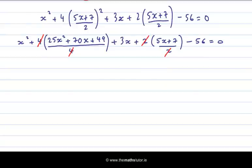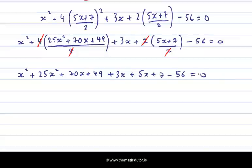So now when I multiply it out, I get x squared plus 25x squared plus 70x plus 49 plus 3x plus 5x plus 7 minus 56 equal to 0.